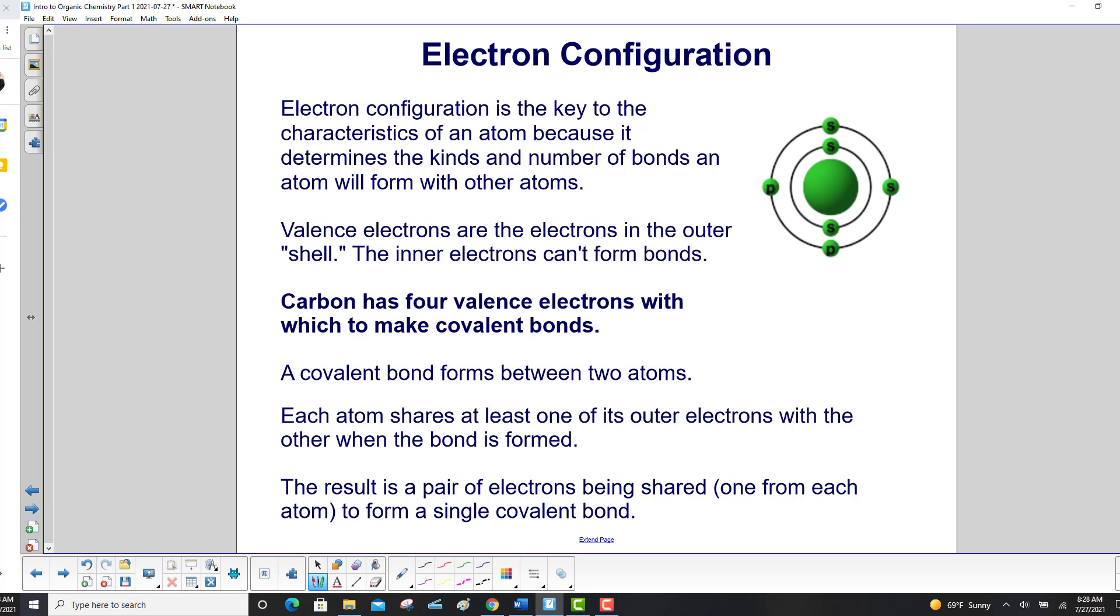So our outer shell on this model, which is carbon, has four electrons. Carbon has six electrons, but only four can form bonds. Carbon has four valence electrons with which to make covalent bonds.